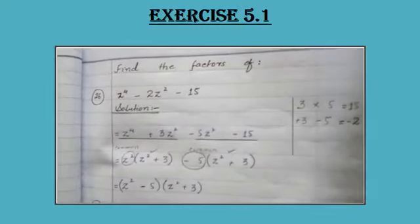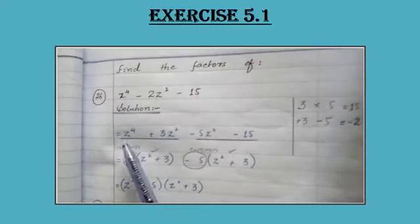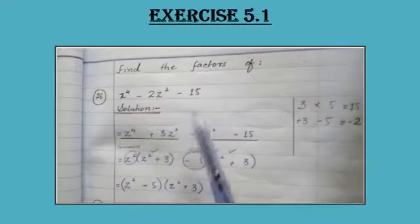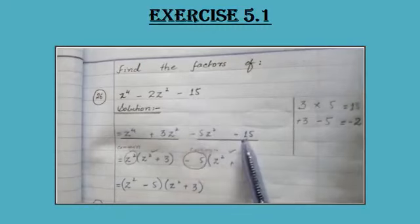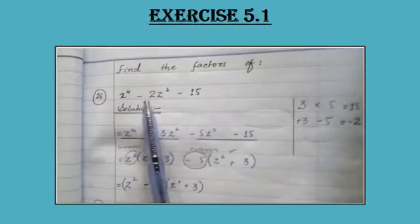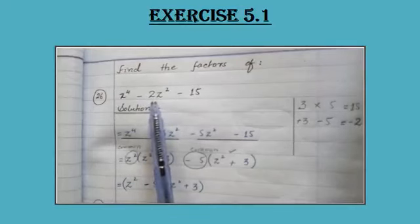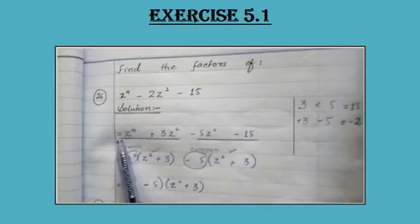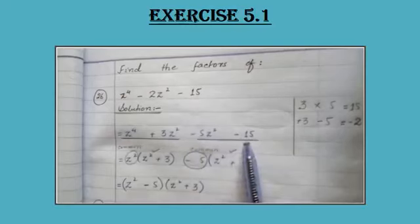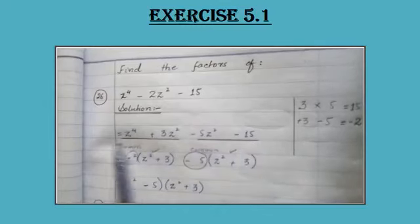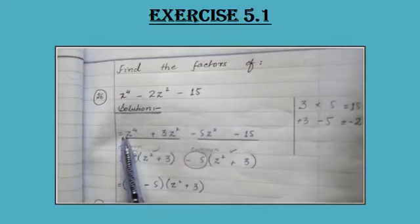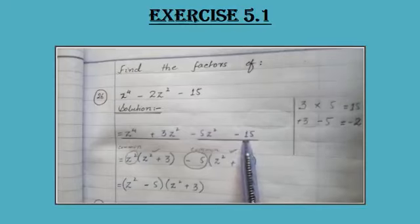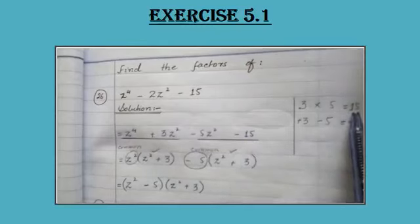First, you copy the first term and the last term. Here we have z raised to 4, then minus 15. Now for the middle term minus 2z², you have to break it into two terms. For this, do a small rough work: take the coefficient of the first term and multiply it by the last term. The coefficient of z⁴ is 1, and the last term is 15, so 1 × 15 = 15. Write down 15.